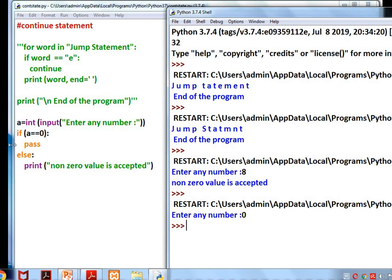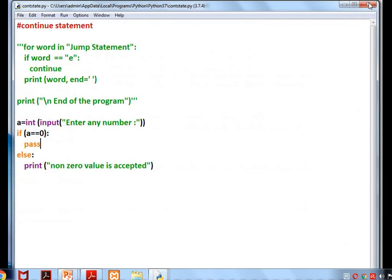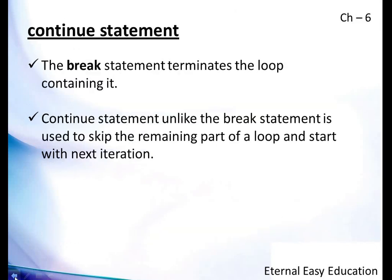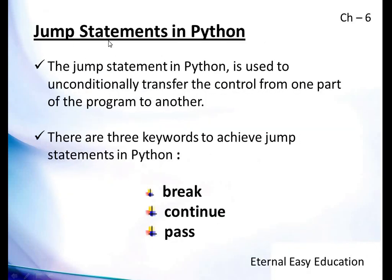When the keyword pass is given, no operation is done. So you have learned three keywords in jump statements: break, continue, and pass. Break will terminate the loop; continue will skip to the next iteration; pass does not perform any operation — it is equivalent to a null statement. These are the jump statements. Thank you, have a good day.